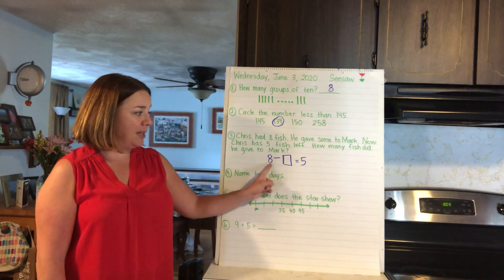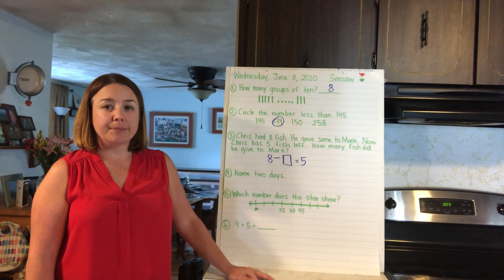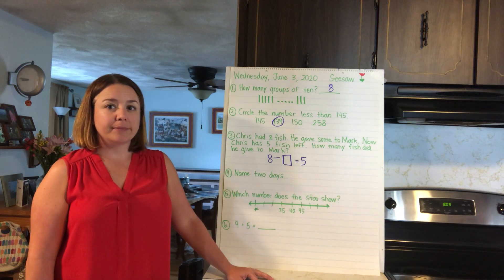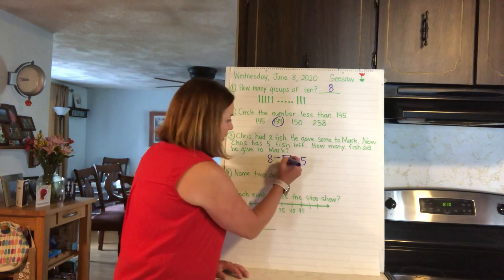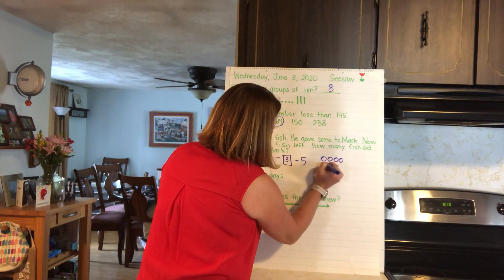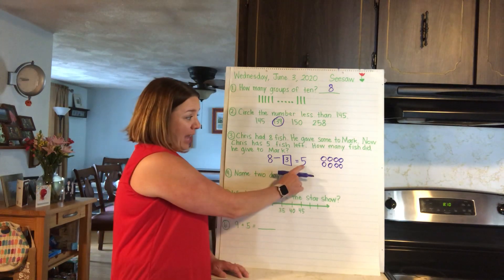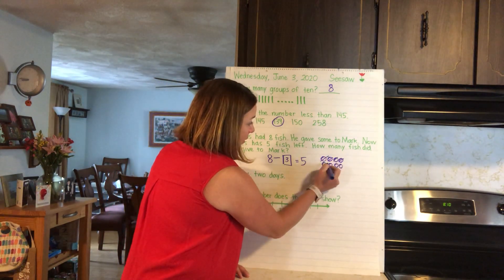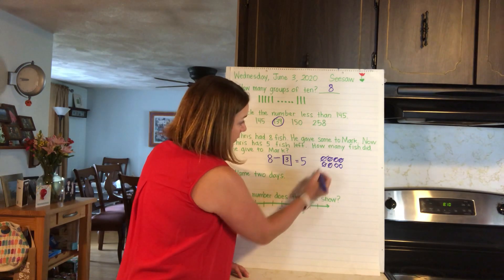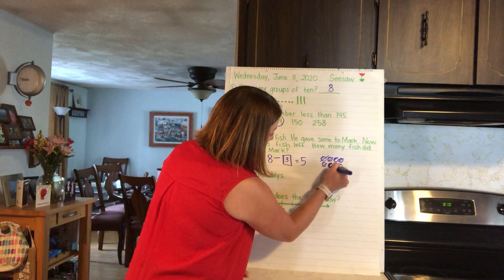If I started with eight and ended up with five, how many did I give away? Three! Let me show you the picture — there's one, two, three, four, five, six, seven, eight. And then we ended up with five, so I'm going to cross off the five: one, two, three, four, five.